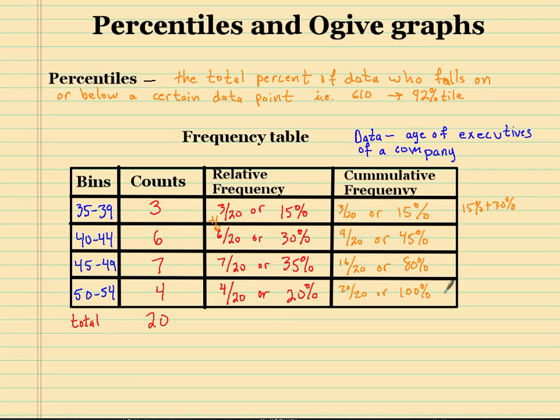The last one on the cumulative will always be 100%, because it's all of our data. So now that we have our table, let's go ahead and show you how to graph these things.